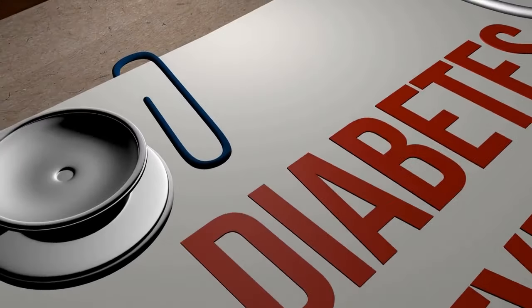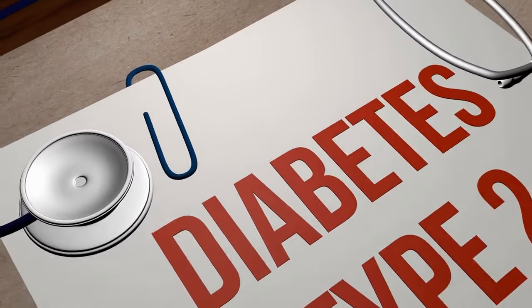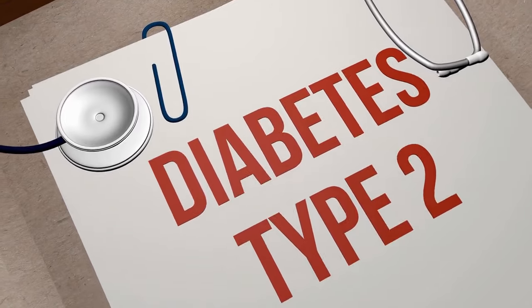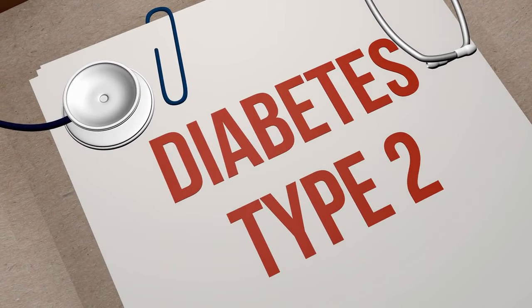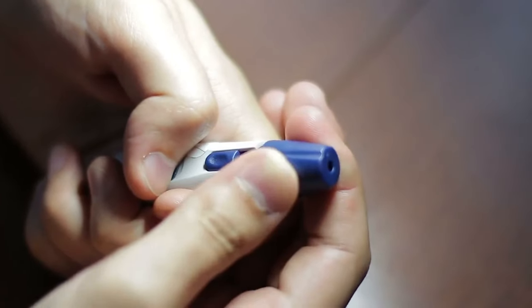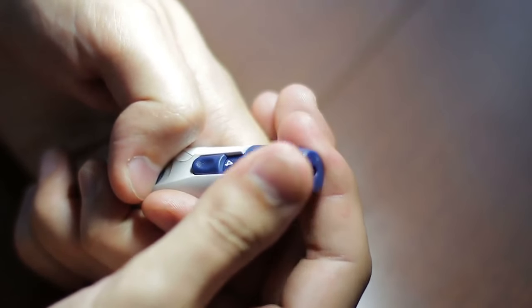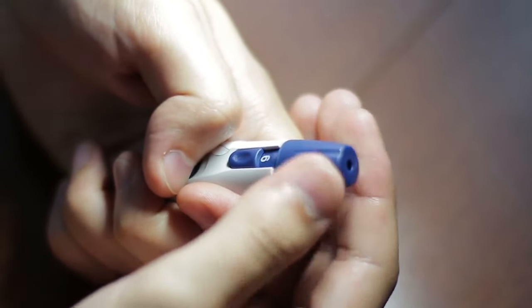Type 1 diabetes: an autoimmune condition where the body's immune system attacks and destroys the insulin-producing cells in the pancreas. People with type 1 diabetes require daily insulin injections to manage their blood sugar levels.